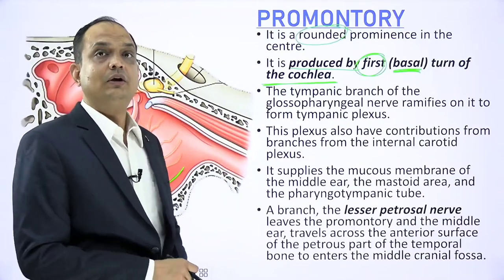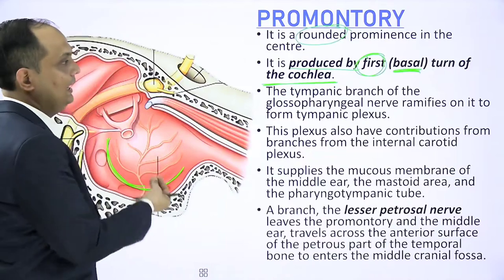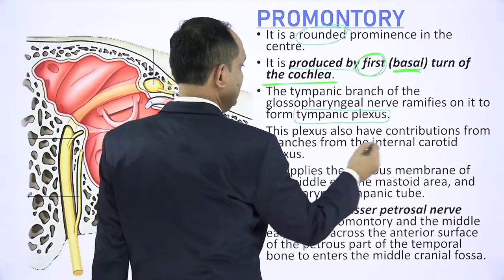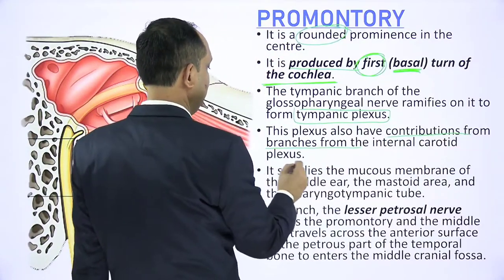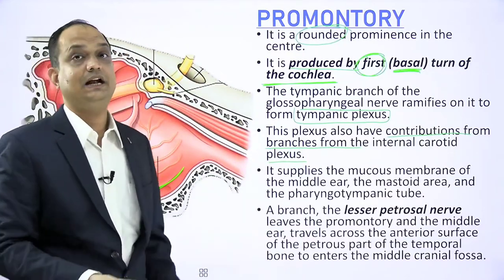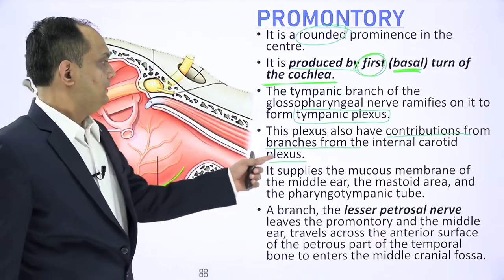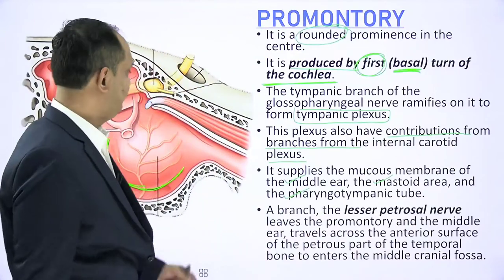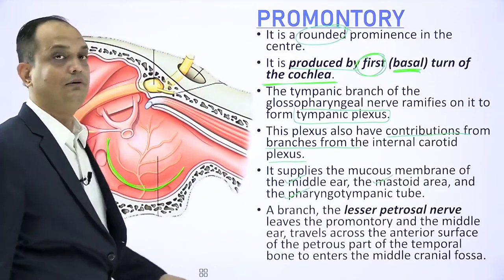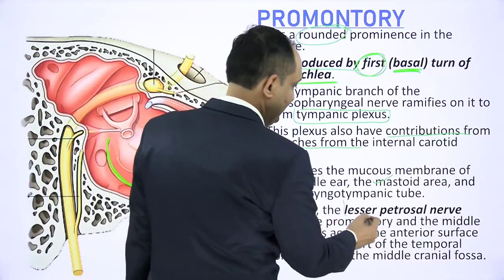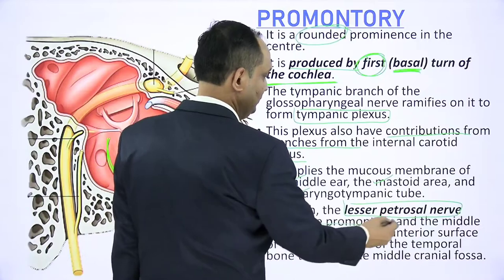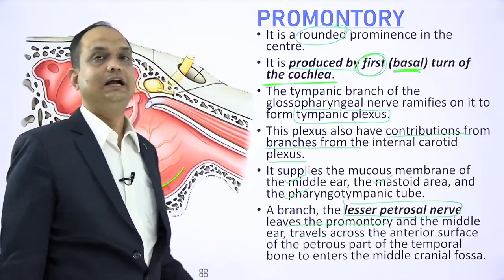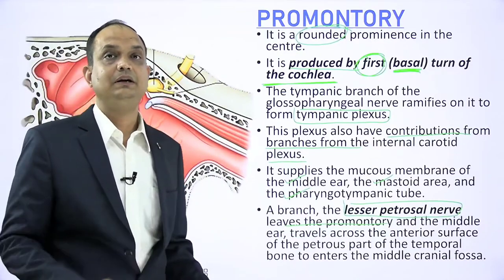The tympanic branch of the glossopharyngeal nerve comes from the floor and ramifies on the promontory to form the tympanic plexus. This plexus also receives contributions from the branches of the internal carotid plexus, which enter through the anterior wall. The plexus supplies the mucosa of the middle ear, mastoid area, and pharyngotympanic tube. From the tympanic plexus the lesser petrosal nerve arises, leaves the promontory, enters the middle cranial fossa, exits through the foramen ovale, and terminates in the otic ganglion.